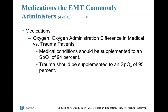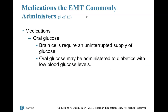Regarding oxygen administration, there is a difference between medical and trauma patients. For medical conditions, supplement oxygen to an SpO2 of 94%. For trauma, supplement to an SpO2 of 95%. Oral glucose — brain cells require an uninterrupted supply of glucose, and oral glucose may be administered to diabetics with low blood glucose levels.